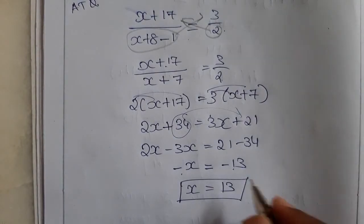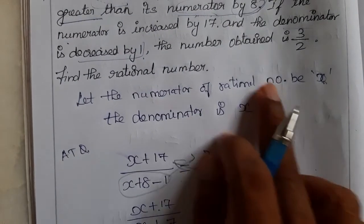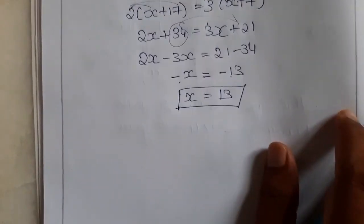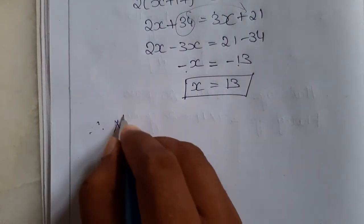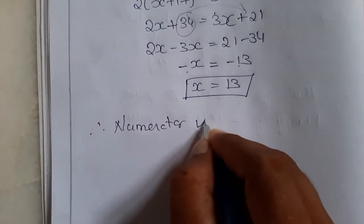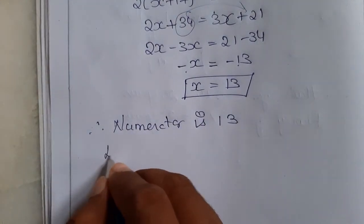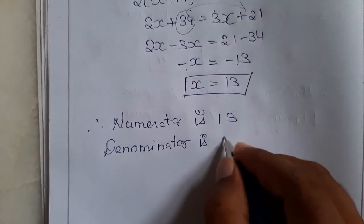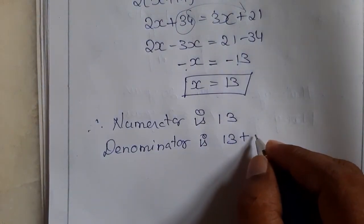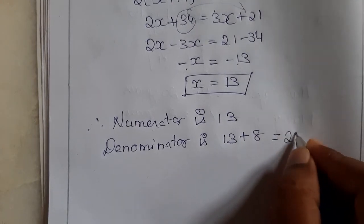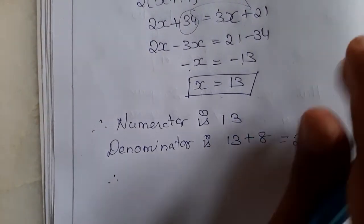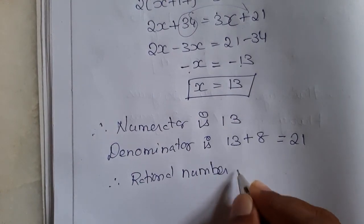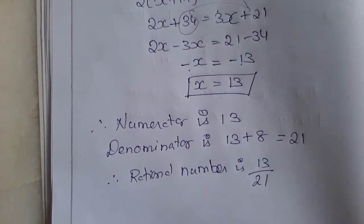So, x is the numerator and the denominator is x plus 8. The numerator is 13 and the denominator is 13 plus 8, which is 21. Therefore, the rational number is 13 by 21.